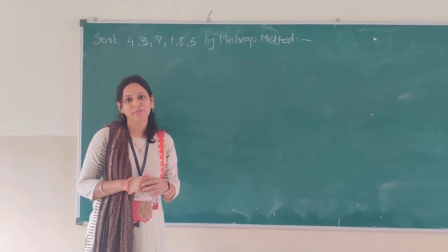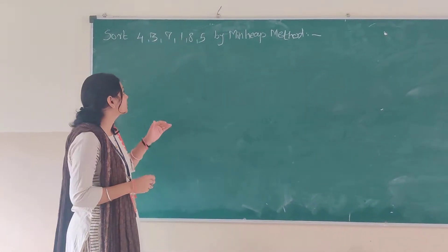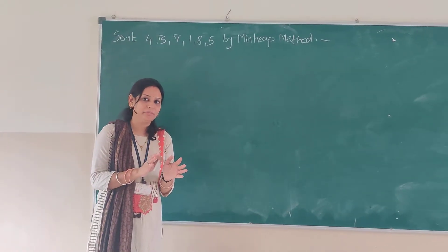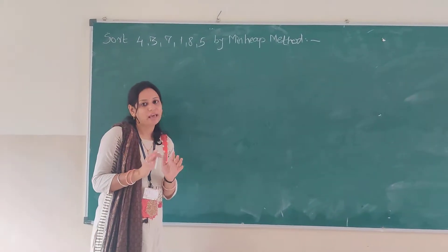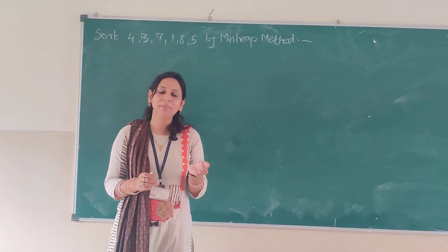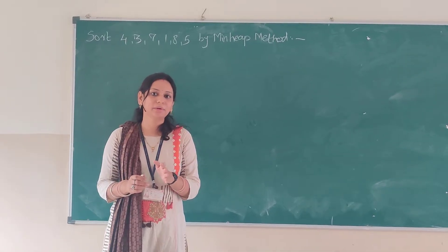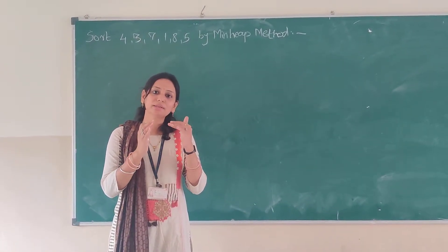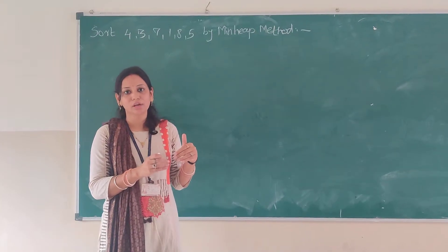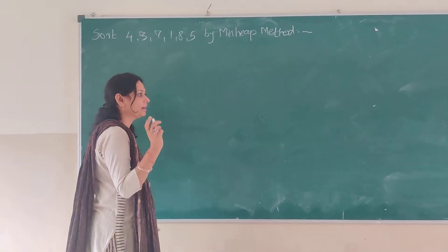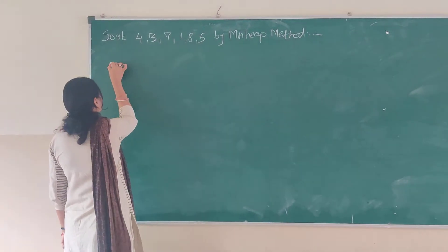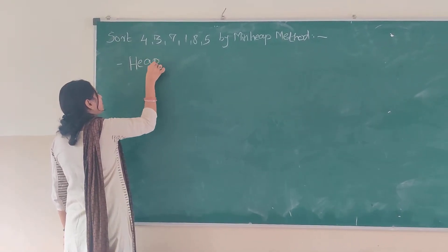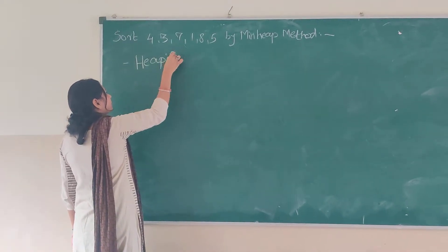In this section we are going to see the heap sort using the min heap method. We have seen there are two types: min heap and max heap. Min heap means your root node should be smaller than the child nodes.